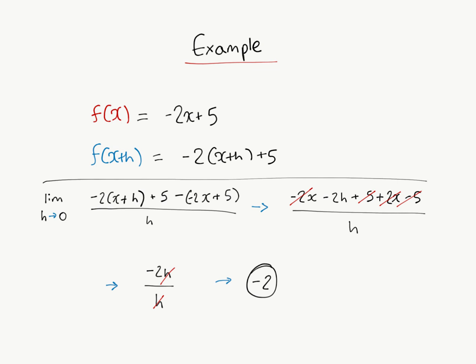We can distribute the equation, and we get negative 2x minus 2h plus 5 minus 2x minus 5, divided by h. We can go ahead and cancel the positive 5 and the negative 5.